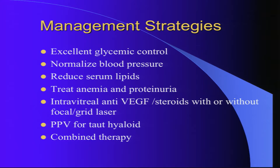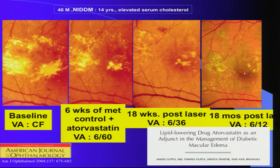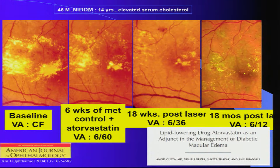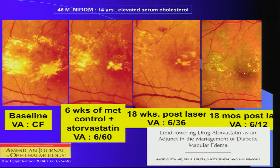Subsequently you can give anti-VEGF, steroids, or do focal grid laser; some cases may require surgery and many may need a combined therapy. This case from our center, which has been published, changed the whole scenario as far as lipid lowering and metabolic control is concerned — a patient with counting fingers vision reached 6/60 with metabolic control alone and anti-lipid drugs, and eventually 6/12 with laser and good control.